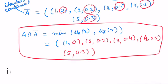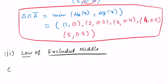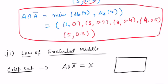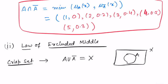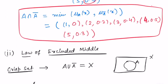The second law is called the law of excluded middle. In crisp sets, this law always holds — that is, A union A complement is always X. If you take any set A within universal set X, A union A complement always equals X. But let us check whether this holds for our fuzzy set example. Let us find A union A complement, which uses the standard union — that is, the maximum of the two membership grades.